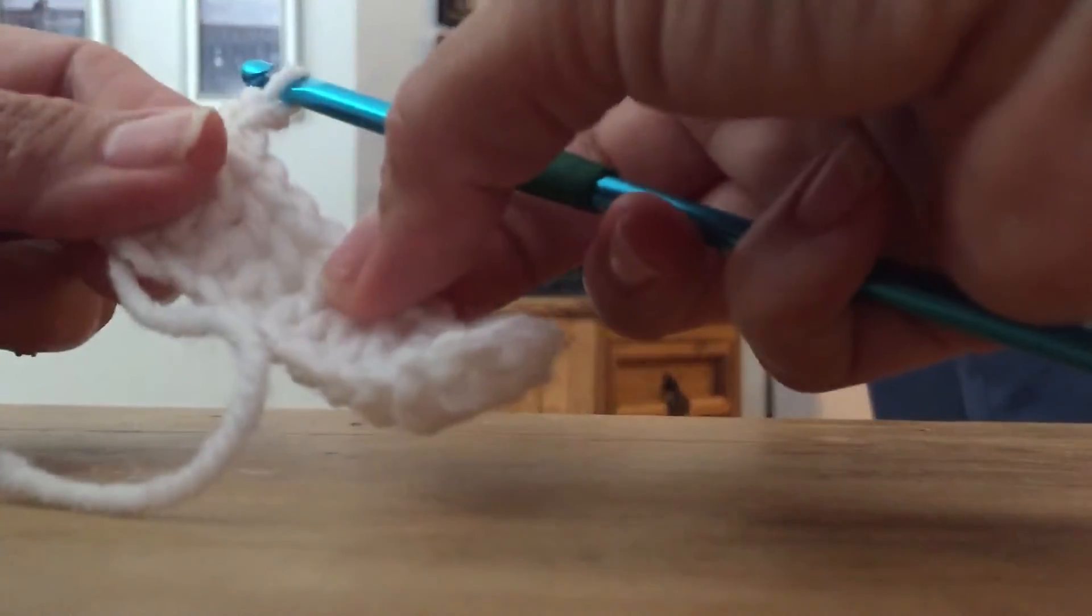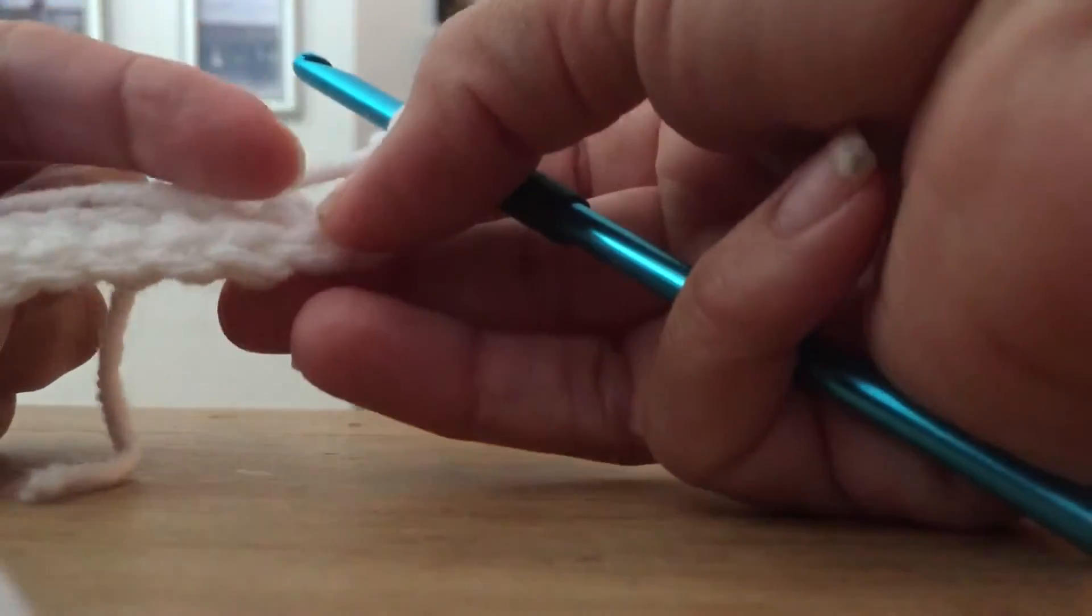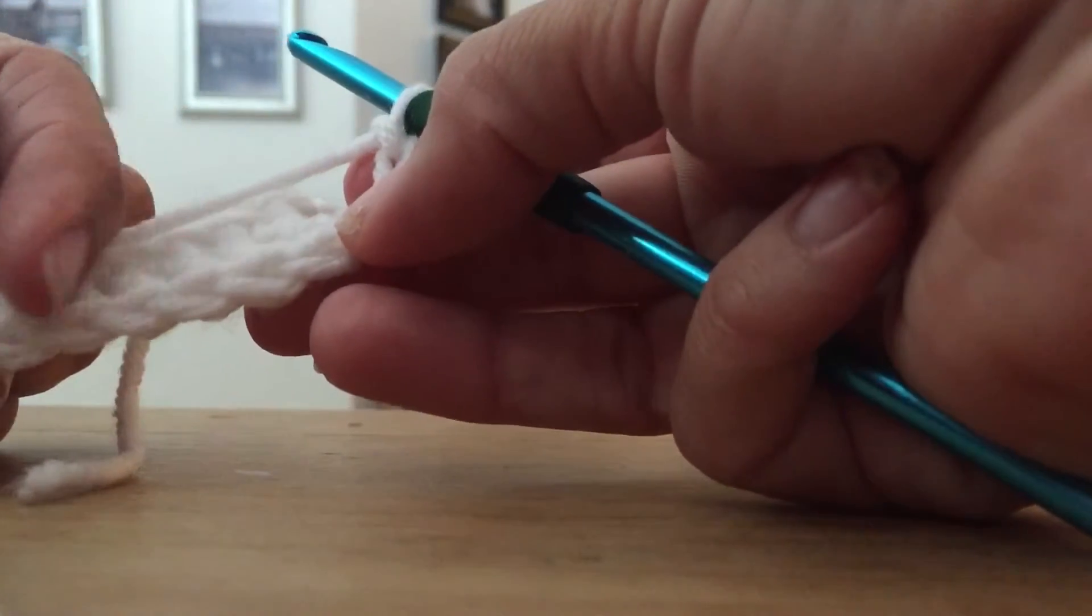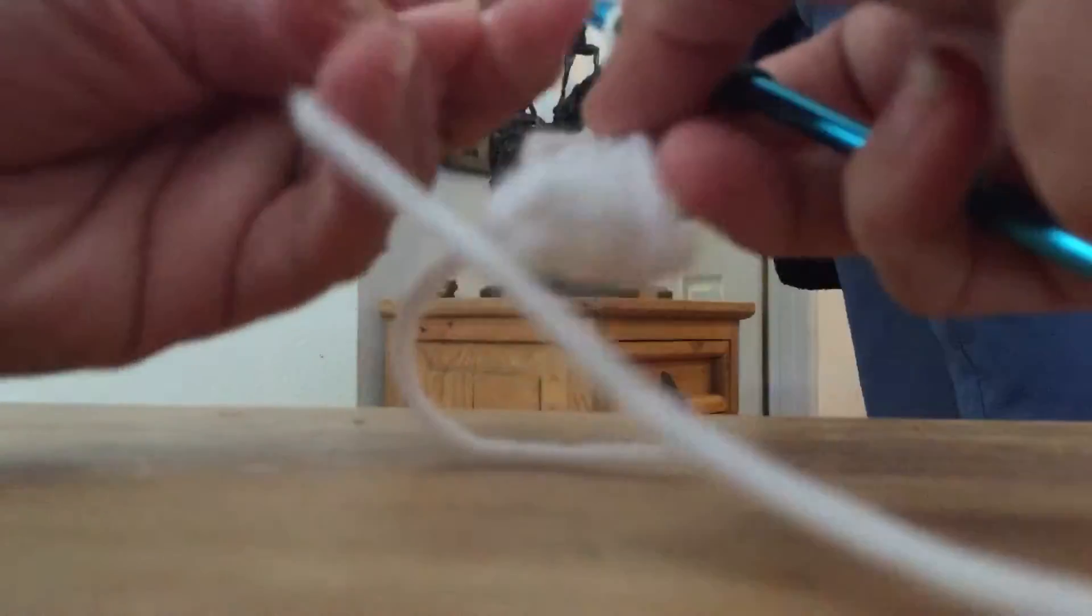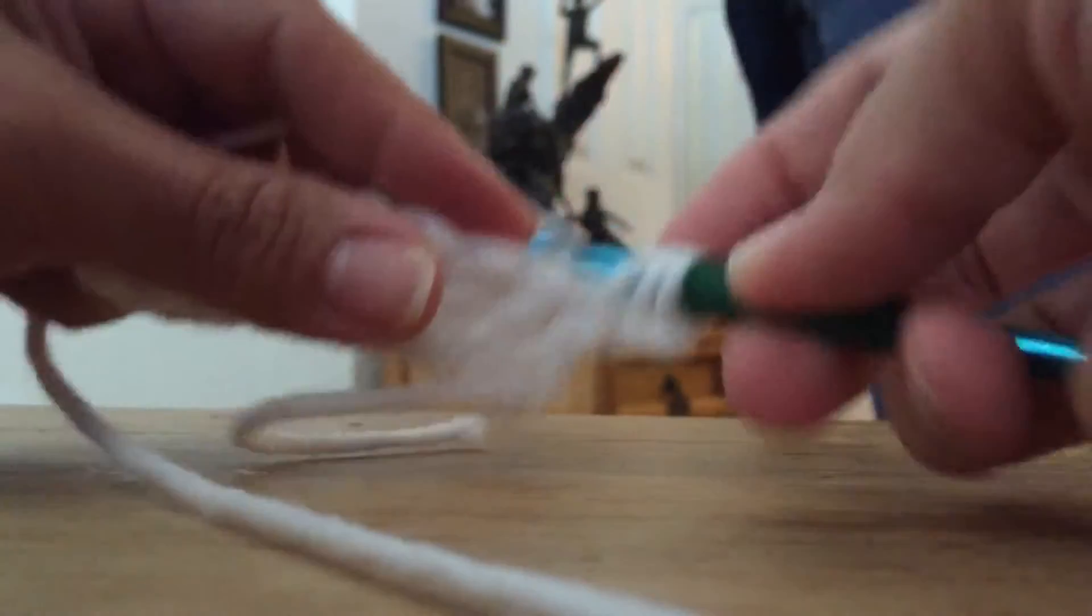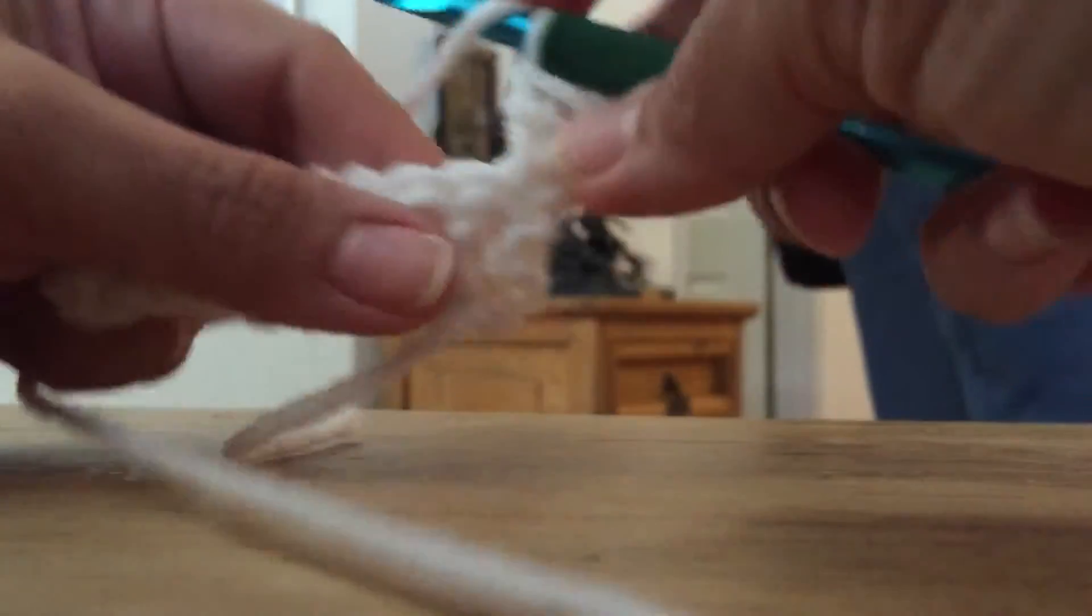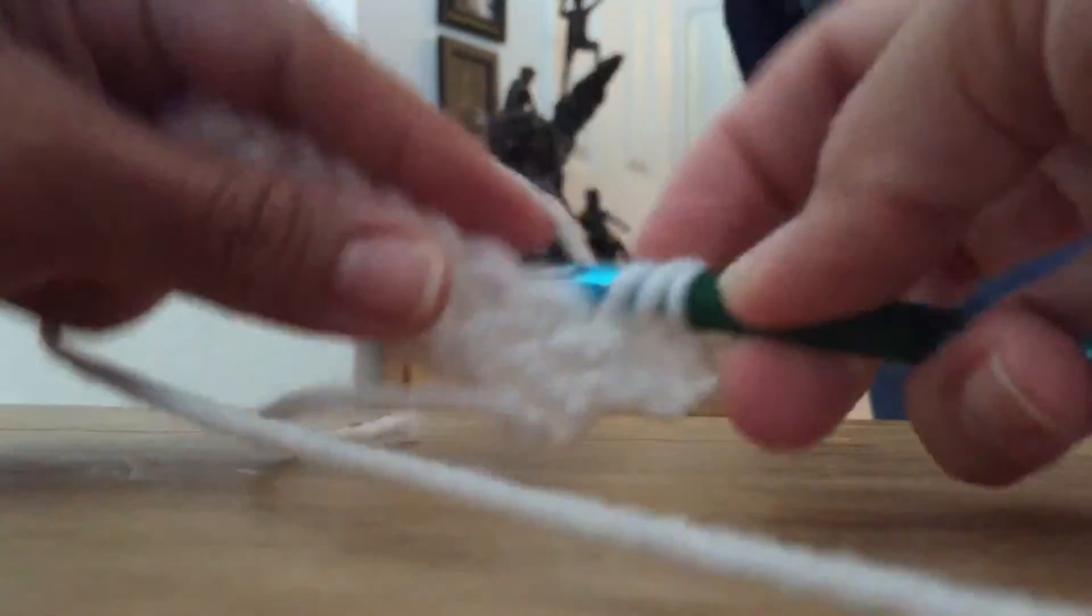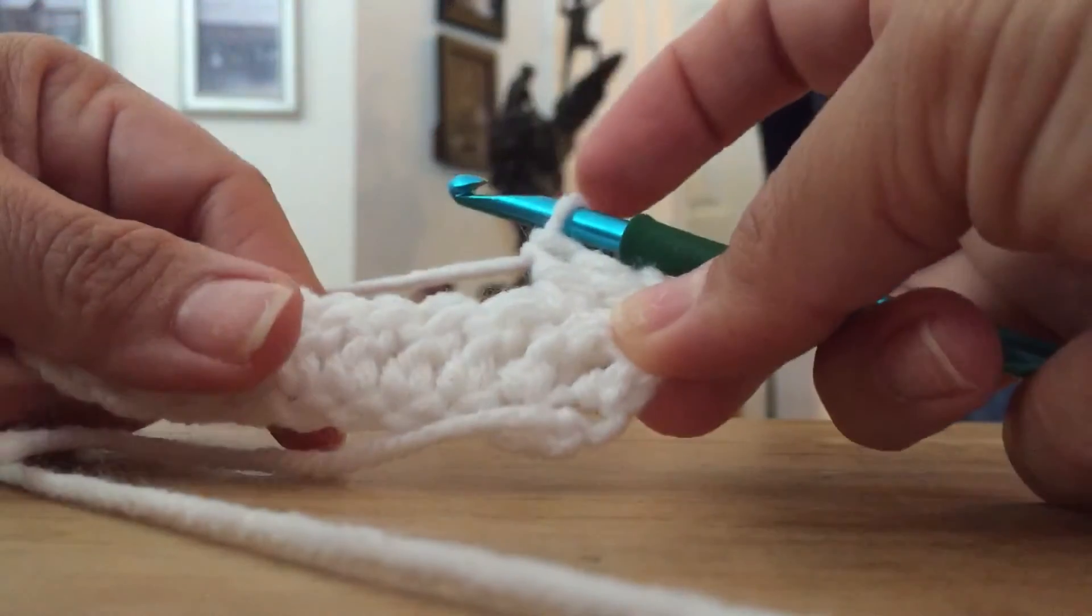And then you turn your work around. And now you just, if you take a look at the top, you see the chains all along the top. You go underneath the chain on the top by yarn over. Yarn over, and then you're going to go through, pull up. Yarn over, pull two. Yarn over, pull two. And you'll just do that all the way across. And double crochet is another basic crochet stitch.